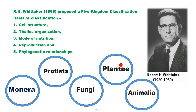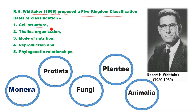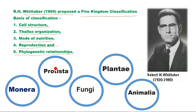So there is the five-kingdom classification. R.H. Whittaker proposed the five-kingdom classification. The basis of this classification includes cell structure, organization, mode of nutrition, reproduction, phylogenetic relationship, and evolutionary relationship. Based on these criteria, he made five groups.